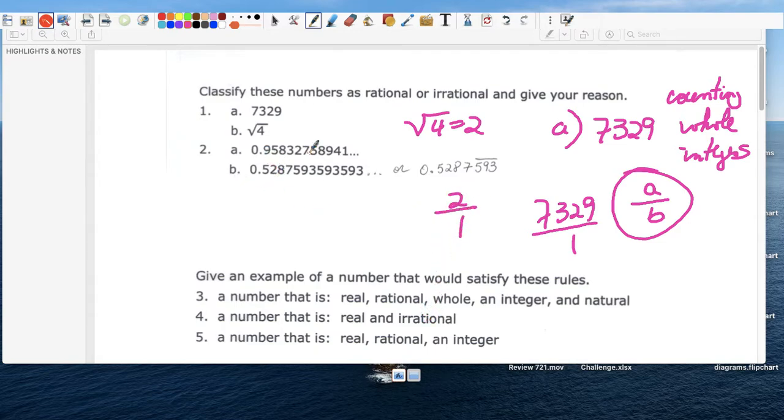0.985732758941, nothing is repeating and it goes on forever and it doesn't repeat, so it's irrational. 2a is irrational because there's no way I can put that over, I don't even know what to put it over because I don't know the place value of the last digit.